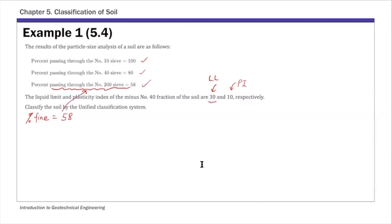And then percent of coarse. So if 58 percent passes number 200 sieve, then what's retained above is simply 100 minus that. And this is 42 percent.